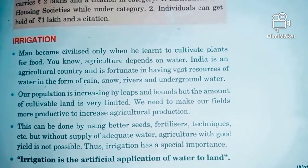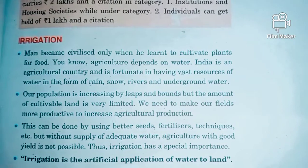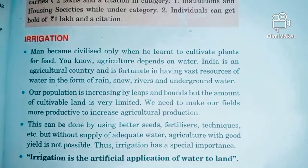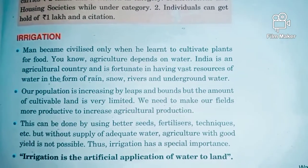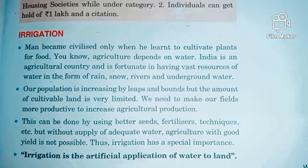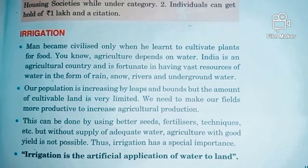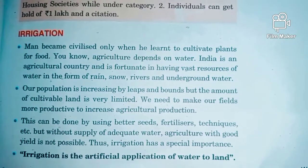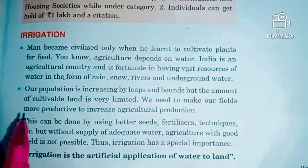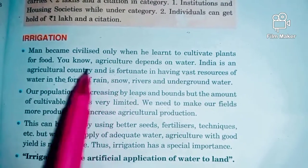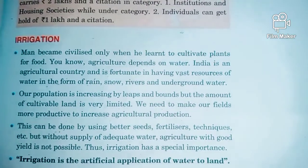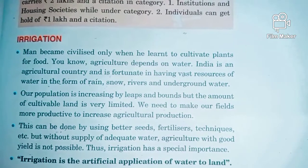We will continue with Chapter 5, Water Resources. Today we'll be discussing irrigation and the irrigation methods widely practiced in India. We know that man became civilized when he learned to cultivate plants for food, and these plants can be cultivated through agriculture. If you want to do agriculture, we need a plenty of water.